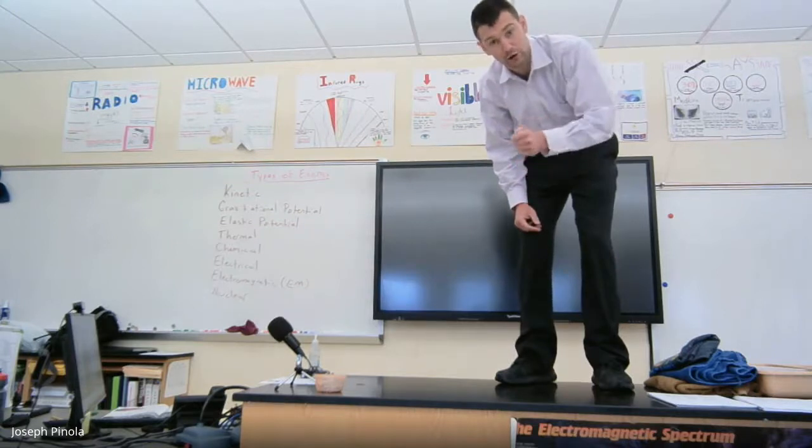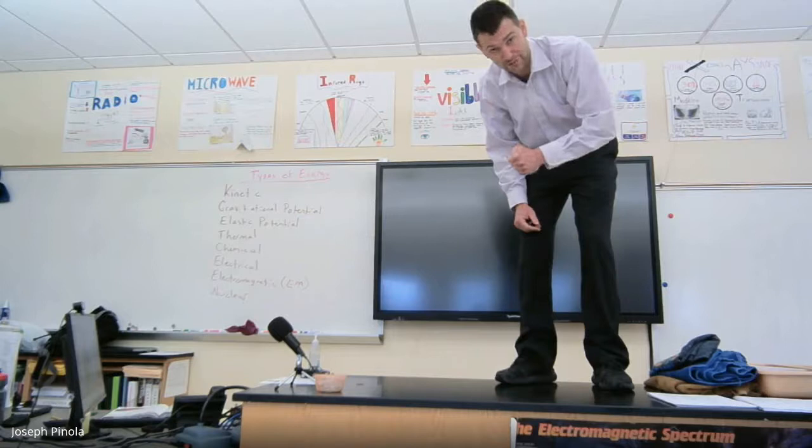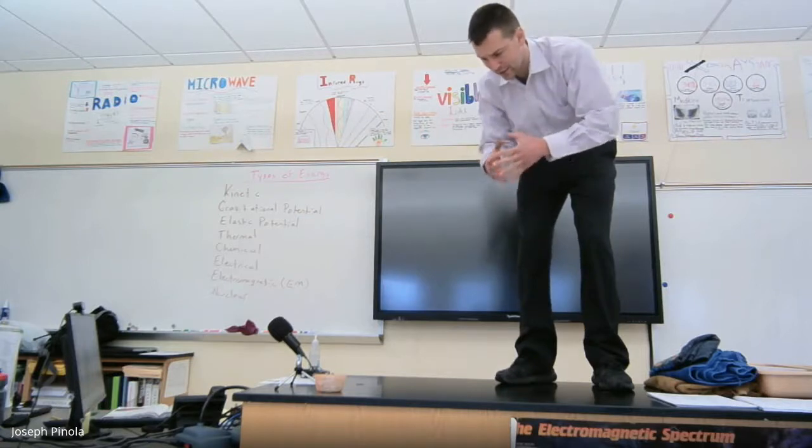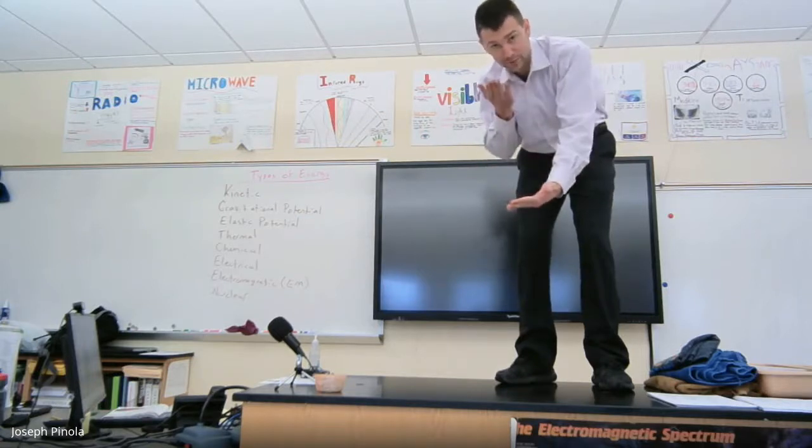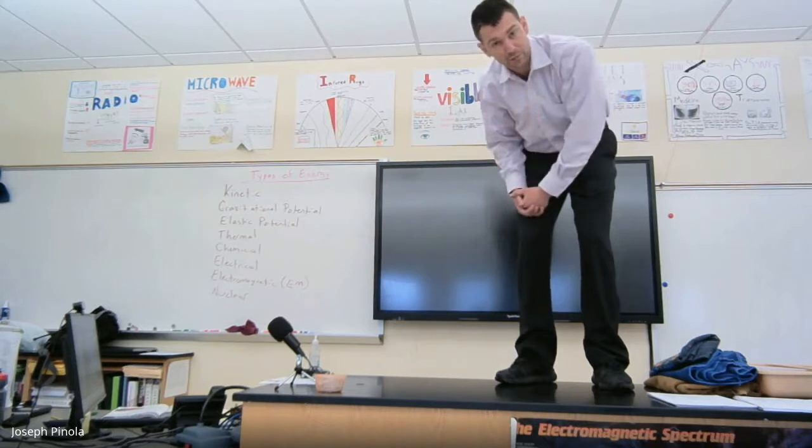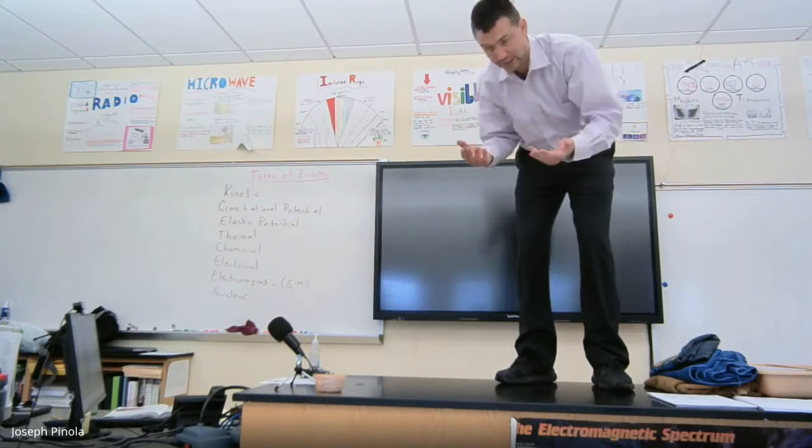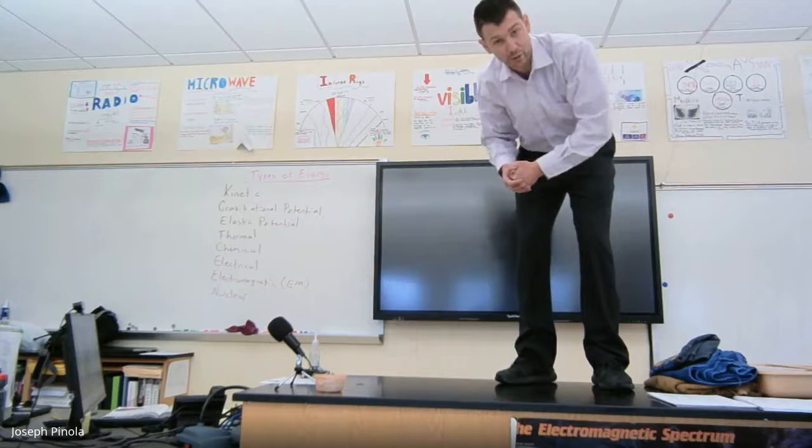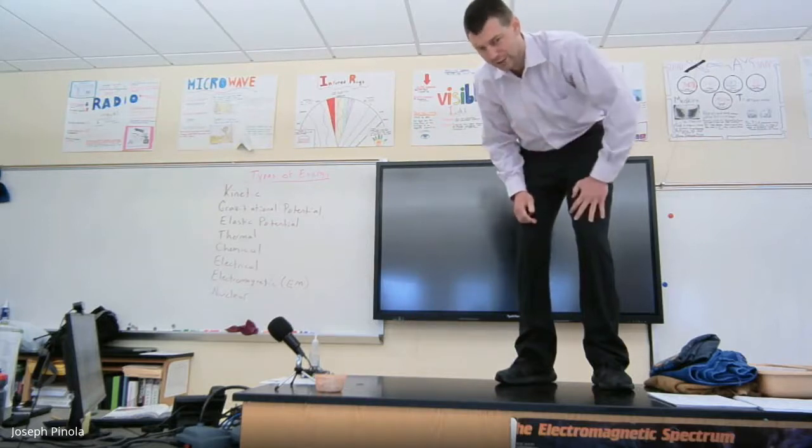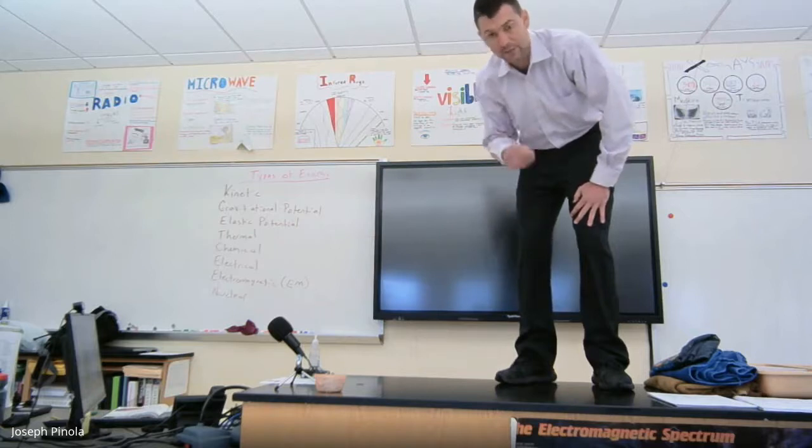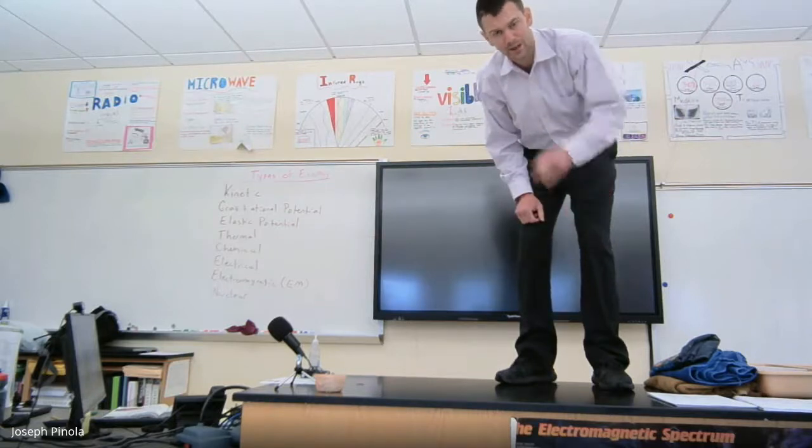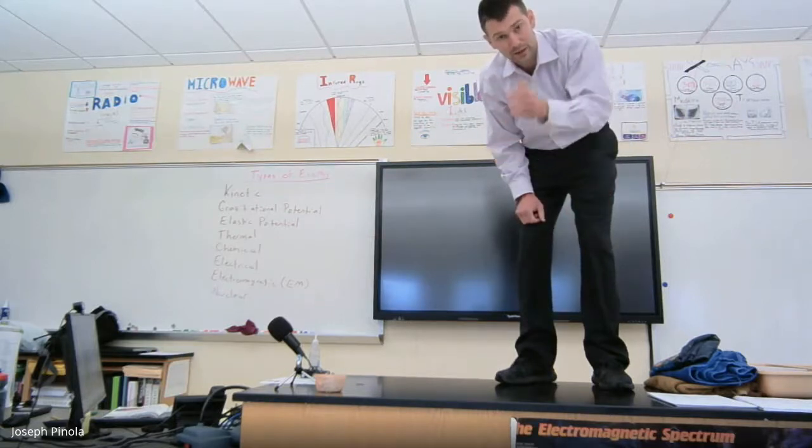This type of energy is called gravitational potential energy, and anything that is above the ground, a height above the ground, has gravitational potential energy based on its mass, its height, and the gravity on the planet that you're at. So I have gravitational potential energy now because I'm above the ground, but can other things? Let's take a look.